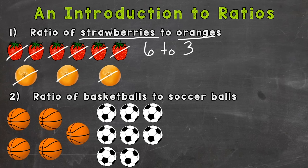So this shows for every six strawberries there are three oranges. And again, strawberries has to come first—the six—because it comes first in our ratio problem, right? Strawberries to oranges. We can also use a colon to represent this ratio, so six to three.